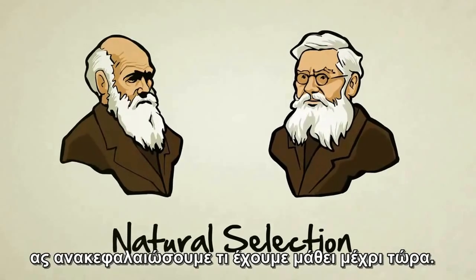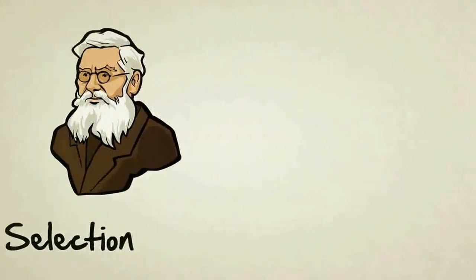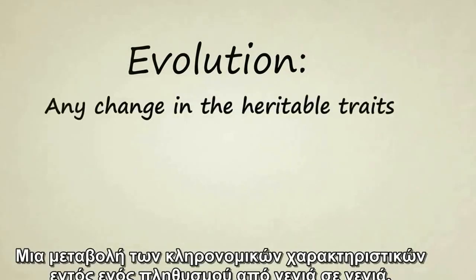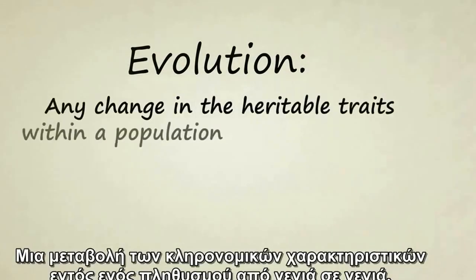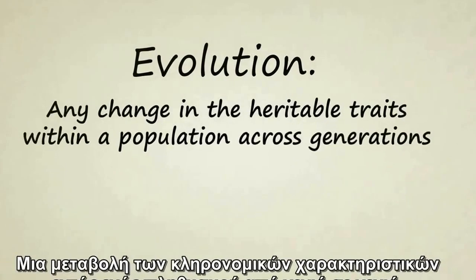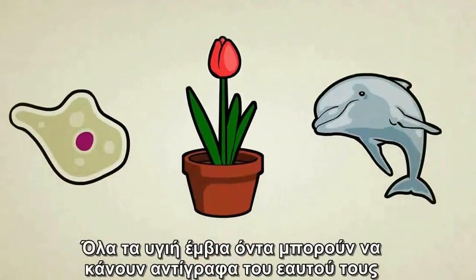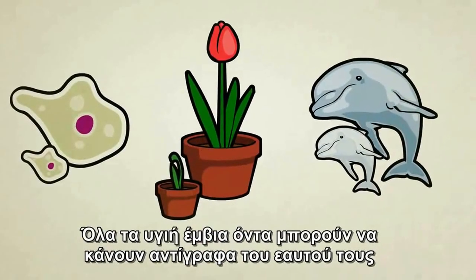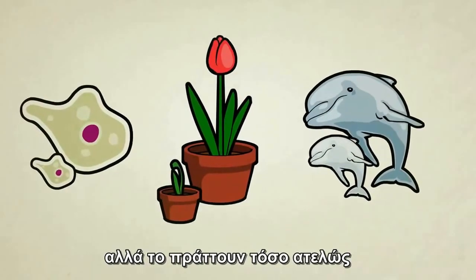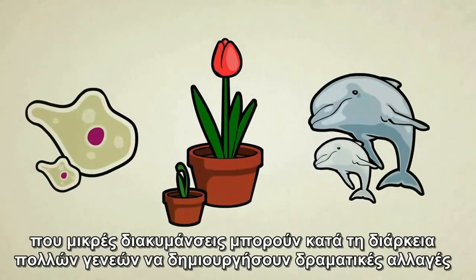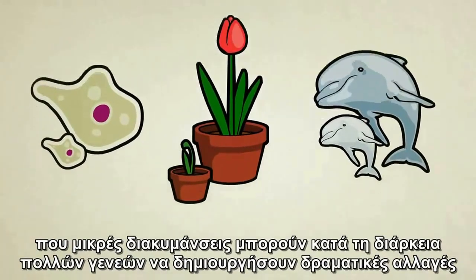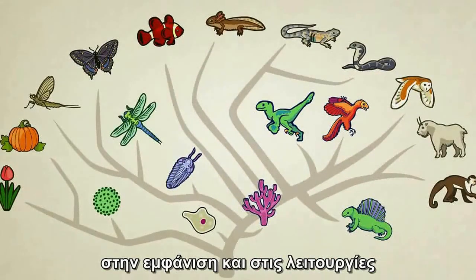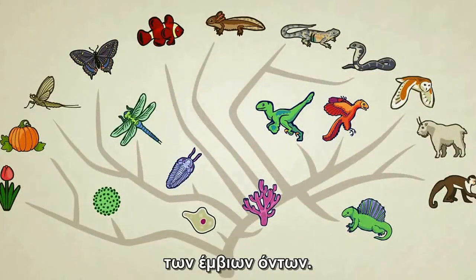Let's recap what we've learned so far. Biological evolution is any change in the heritable traits within a population across generations. All healthy living things can make copies of themselves, but they do so imperfectly. Small variations can add up over generations to create dramatic differences in the body form and function of living creatures.